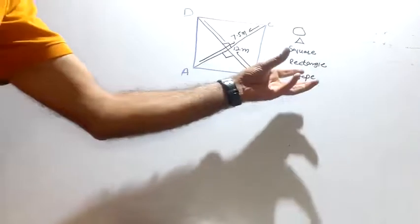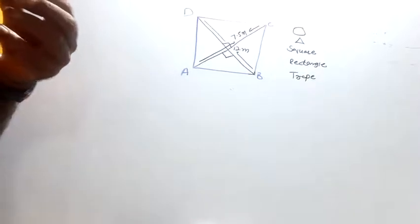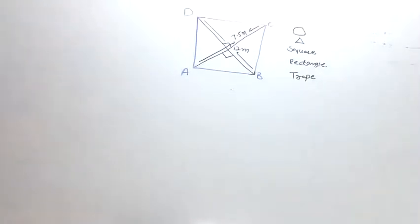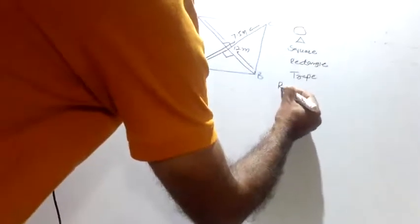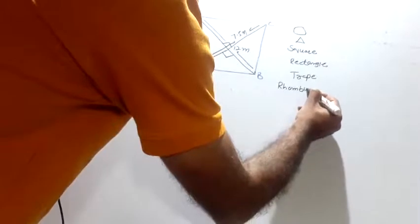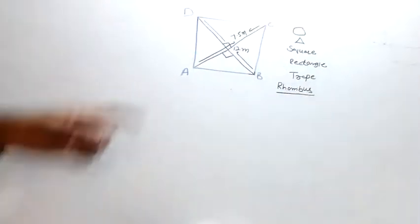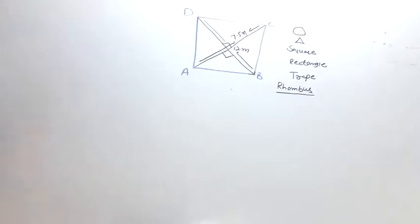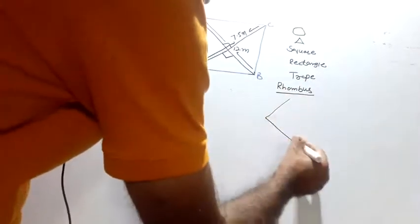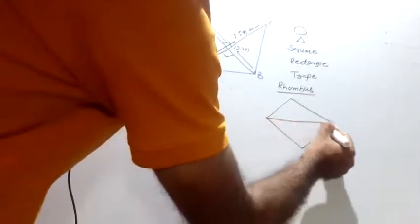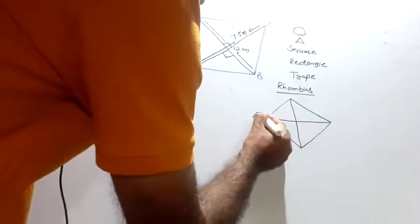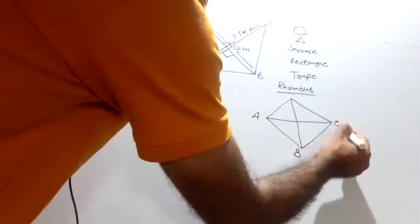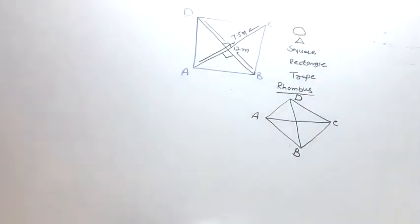Quadrilateral - we have to use a particular type of quadrilateral, that is rhombus. Using a particular type of quadrilateral called rhombus. This is a quadrilateral. Trapezium is also a quadrilateral.